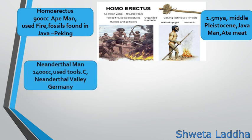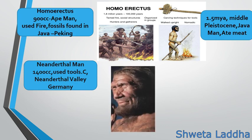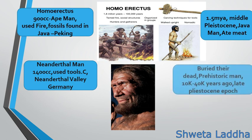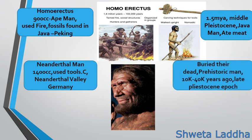Then came the Neanderthal man, very intelligent like modern-day human beings, with a cranial capacity of 1400 cc. They used tools and their fossils were found in the Neanderthal valley of Germany, hence the name. They were more social, lived in caves, buried their dead, wore clothes, and it is believed they wore jewelry and ornaments. They were present during the late Pleistocene epoch and constructed flint tools and performed ceremonies.